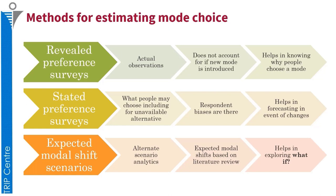The second method for estimating mode choice would be the stated preference survey. Here we ask people what they will choose under a given set of alternatives. The problem with these surveys is that respondents can be biased. However, if we are able to account for the biases in how we prepare our survey method, we can actually forecast the impact of inclusion of new strategies, policies, or development strategies.